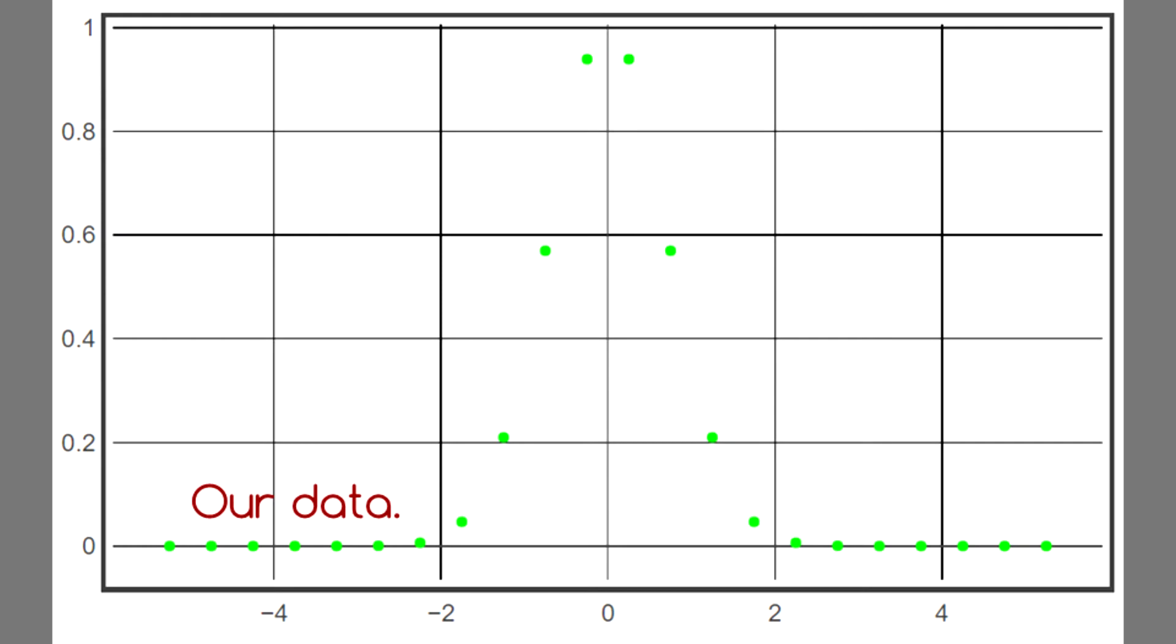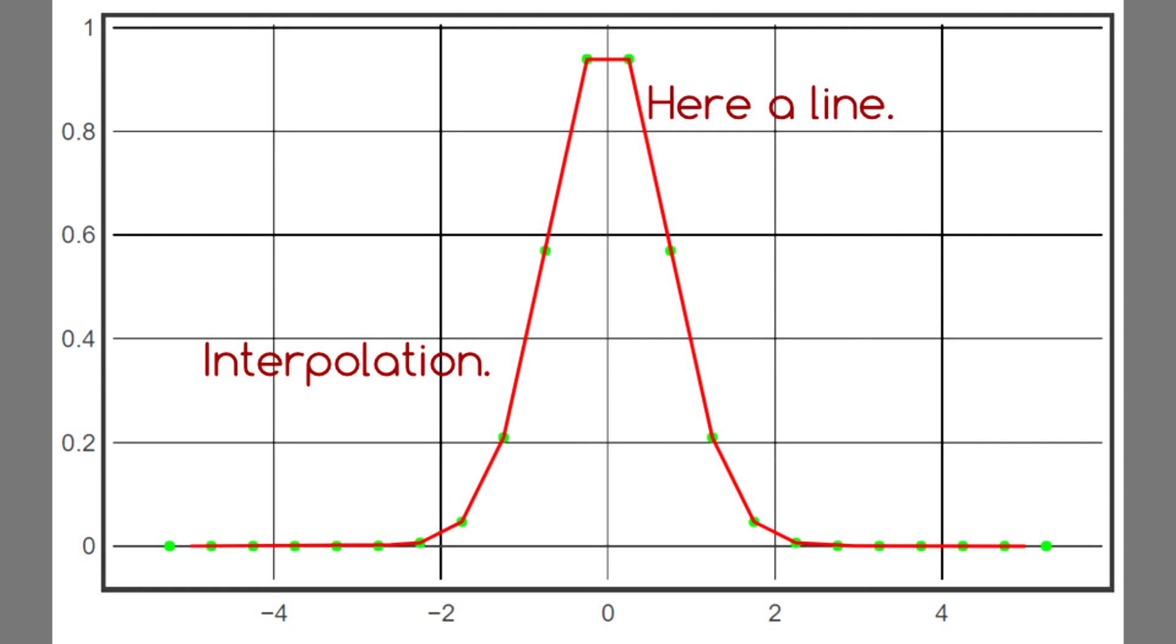Here's the data we're trying to interpolate. It comes from e to the negative x squared. And here's the result of our linear interpolation. It makes a line between each two data points.